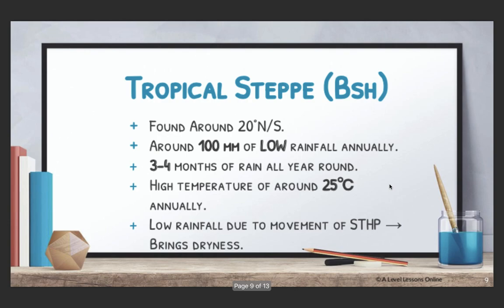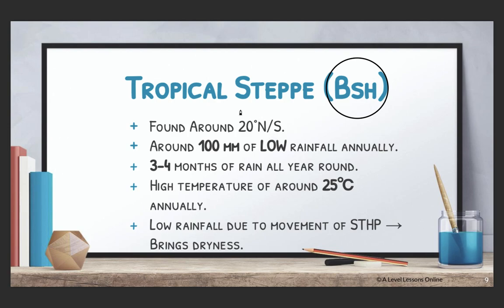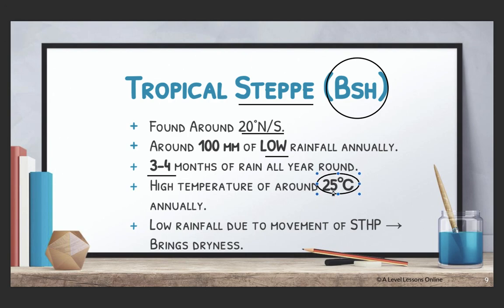Next we move on to the arid tropics. The first three — rainforest, monsoon, and savanna — are known as the humid tropics. For the arid tropics, we have first the BSH or tropical steppes, and second the BWH which is the desert. Tropical steppes, known as BSH, are found around 20 degrees north or south. As an arid climate, they have around 100 mm of low rainfall, with only 3 to 4 months of actual rainfall annually, and even that rainfall is extremely low.